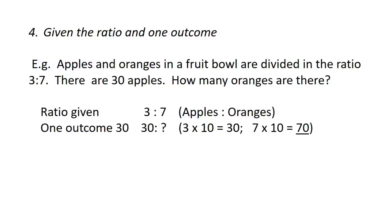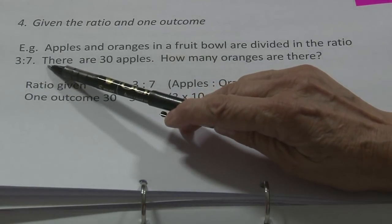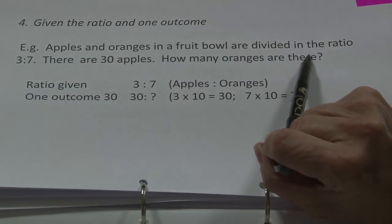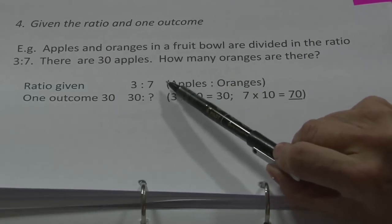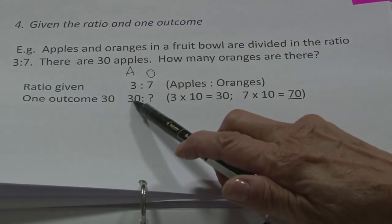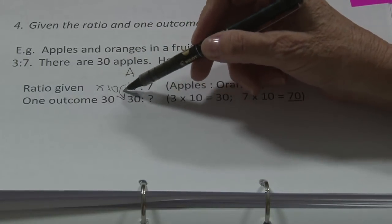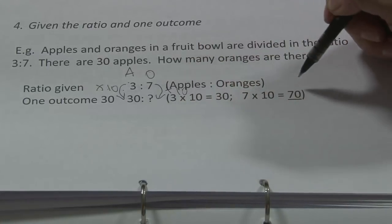The fourth type: they give you the given ratio and one outcome. For example, apples and oranges in a fruit bowl are divided in the ratio of 3 to 7; there are 30 apples — how many oranges are there? It's important to realize that apples come first, so 3 is apples and 7 is oranges. What have they done with 3 to get 30? They multiplied by 10. So you also multiply the 7 by 10, and the answer is 70.